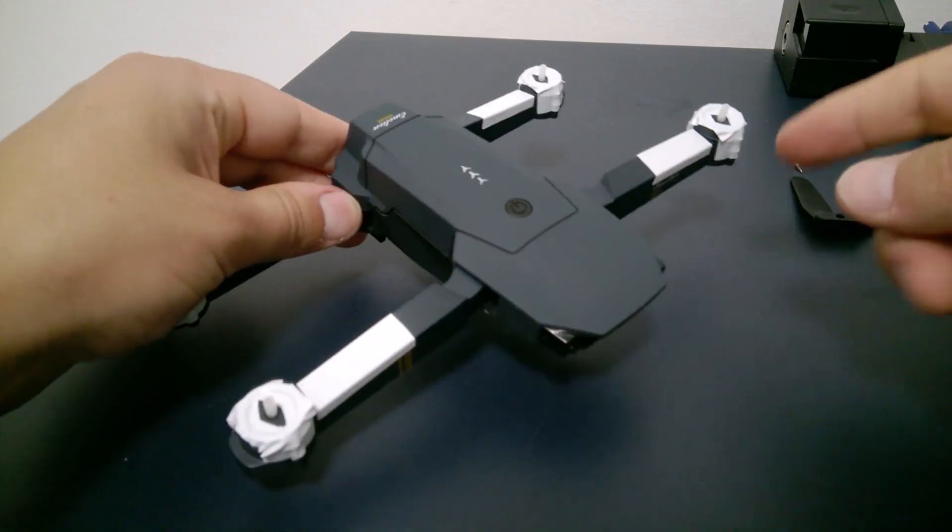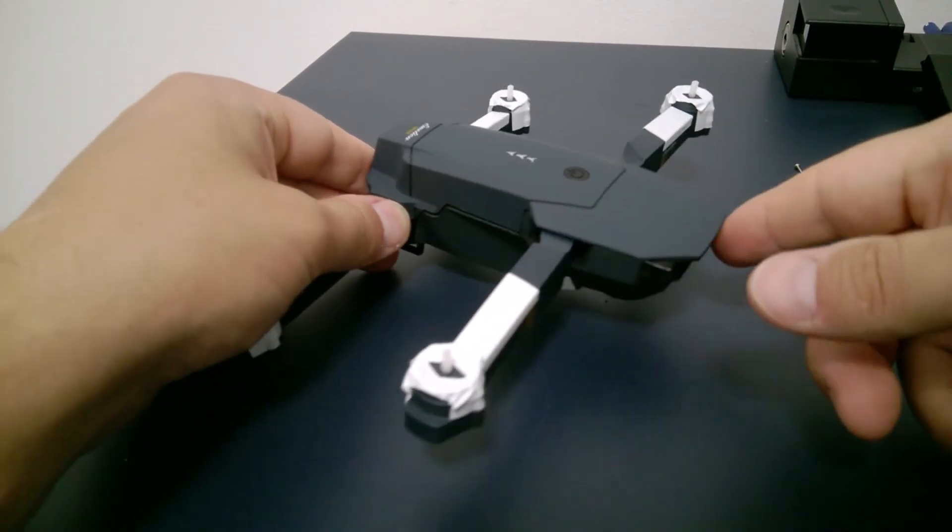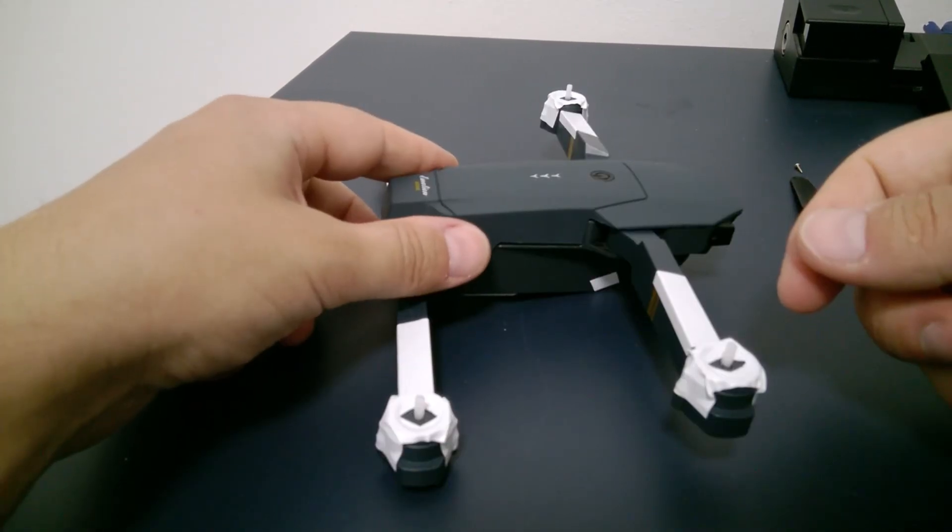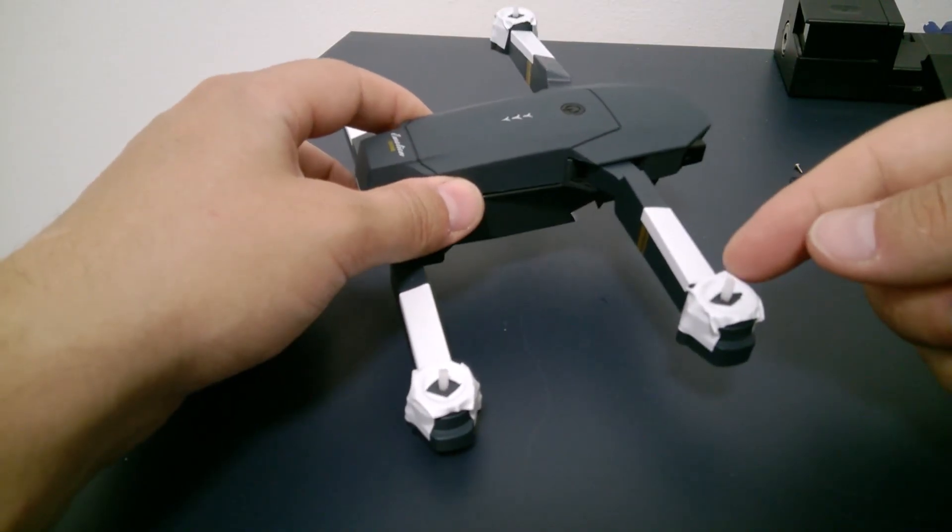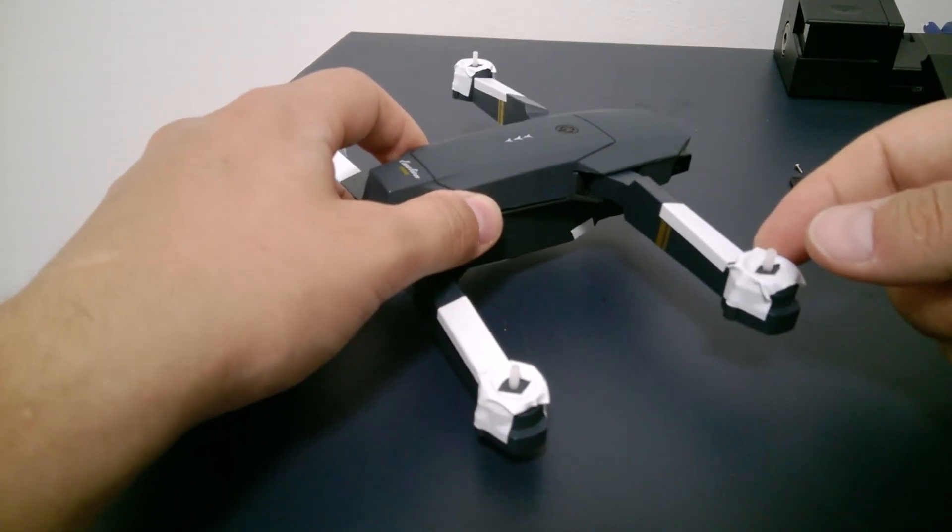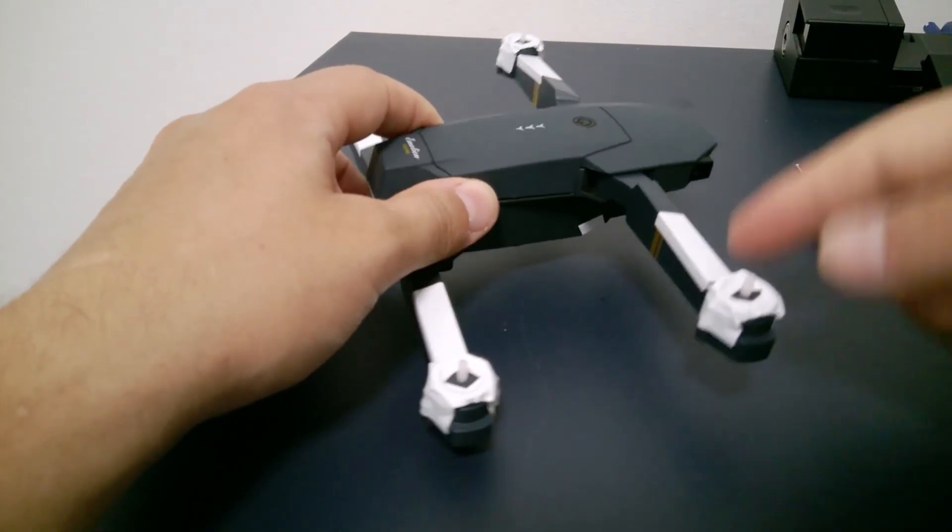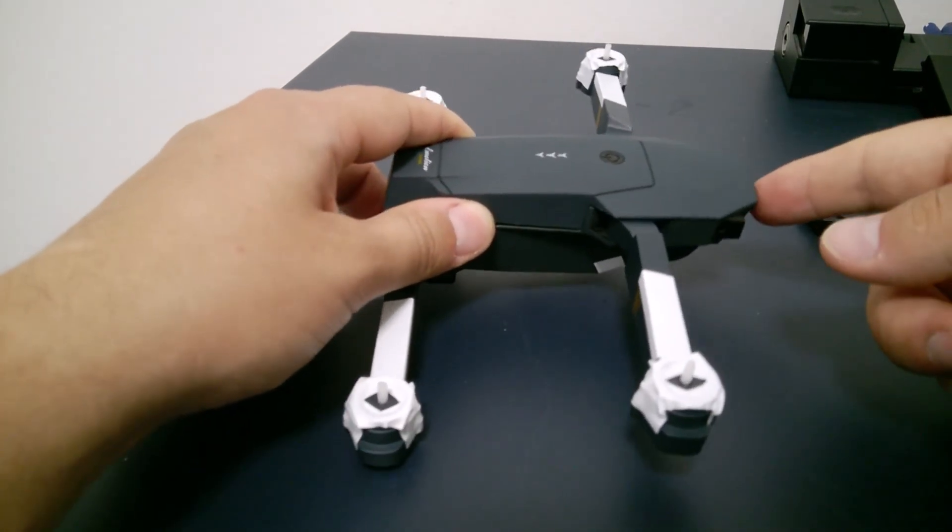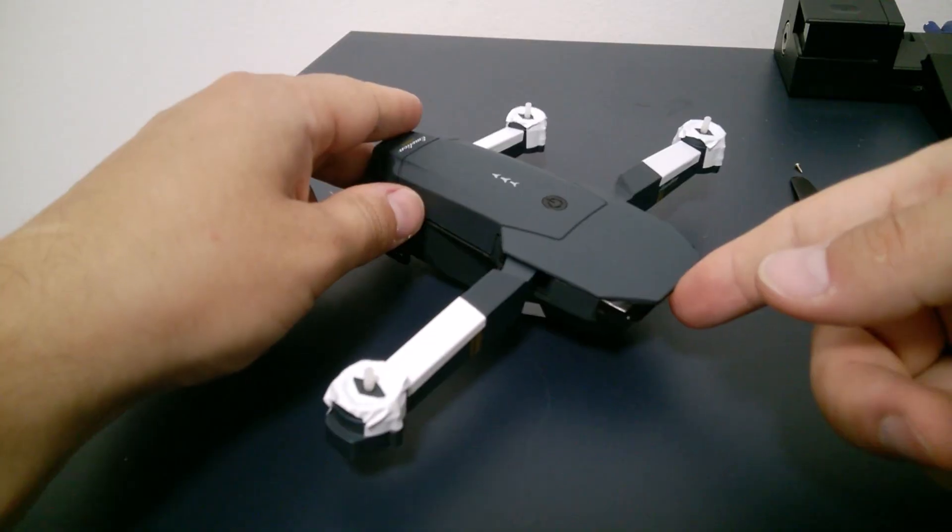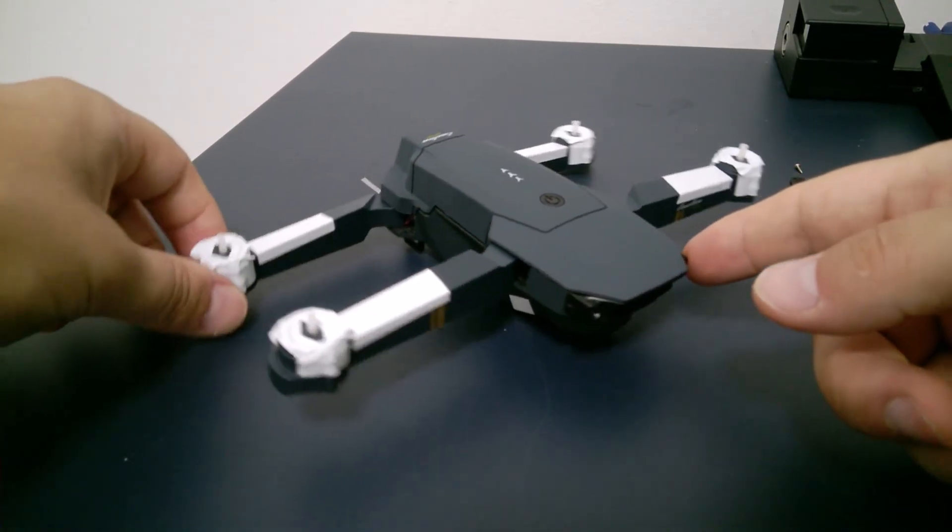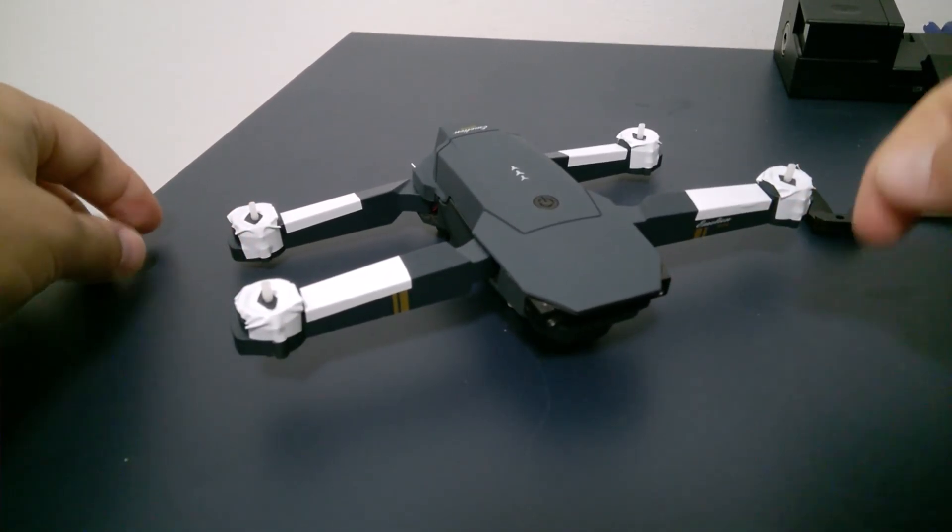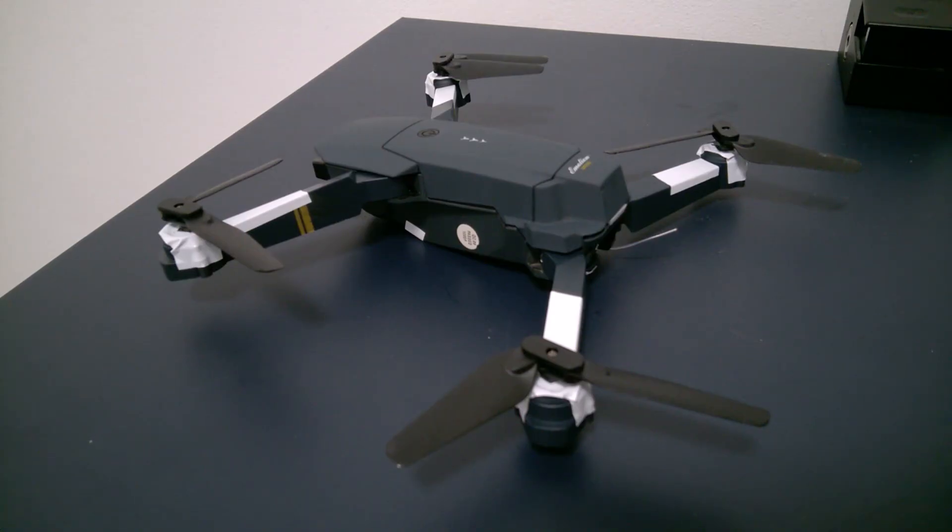So now what I need to do is to put the propellers back and turn on the drone again. And I also have to check if this tape will affect the performance of the drone because it adds on some weight. And I need to check that the drone is able to maintain balance in the air. Now all the propellers are back and we are ready to test them.